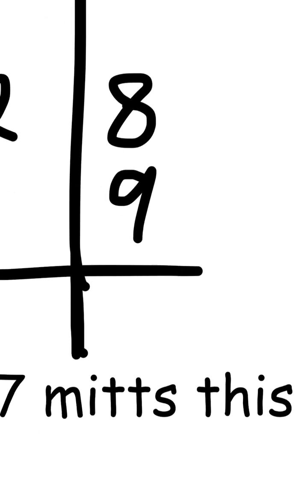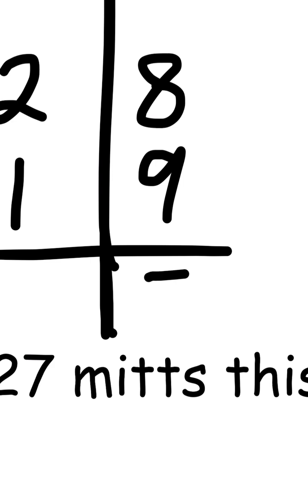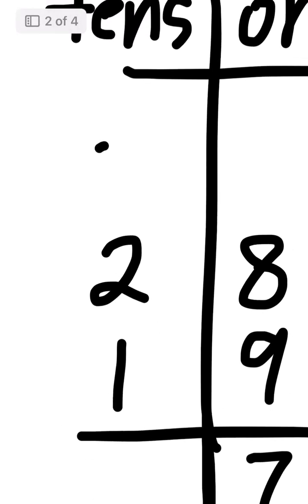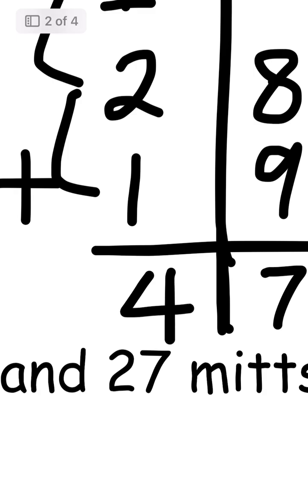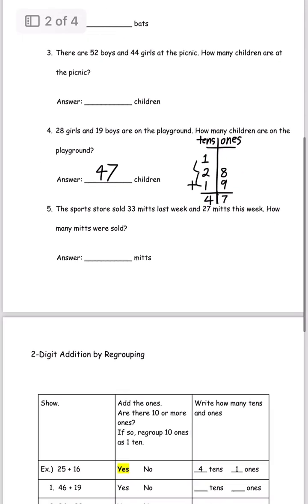If you add 8 and 9, what do we get? 17 — and 17 is more than 10 ones, which means we have to regroup. It's larger than 9, so we have to regroup. We can't write 17 all in the ones place because the 1 belongs on the tens place. So we put 1 over there, then add: 1 plus 2 is 3, and 3 plus 1 is 4. So the answer is 47 children.